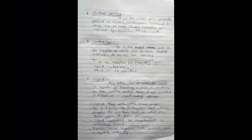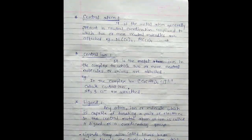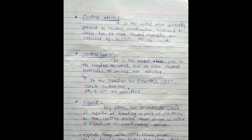Third term involved in coordination chemistry: central atom. It is a metal atom generally present in neutral coordination compound to which two or more neutral molecules are attached. For example, Ni(CO)4, Fe(CO)5, etc.